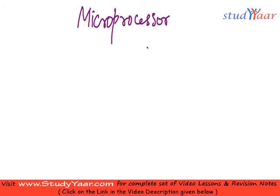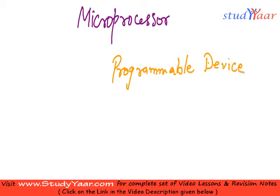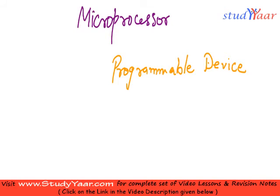In this session we are going to talk about microprocessors. So what is a microprocessor? A microprocessor is a programmable device, but it is not programmed in hardware — it is programmed in software. Like we had PLDs, PALs, and PLAs — these were devices which were programmable in hardware; you could blow up fuses and make them perform specific functions. A microprocessor is a software-based programmable device wherein you write a program, and based on this program your microprocessor is going to behave in a certain way.